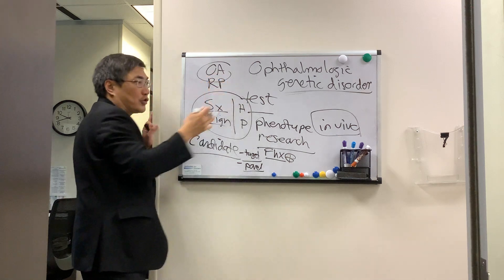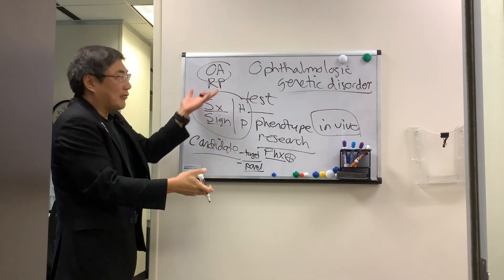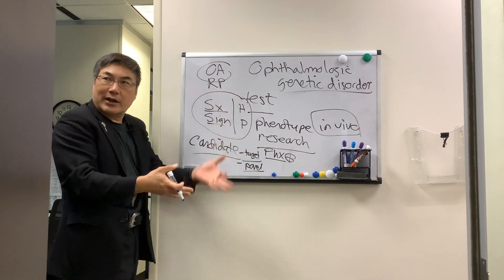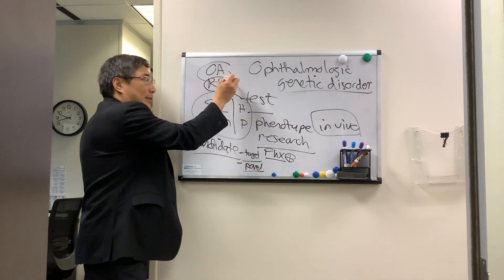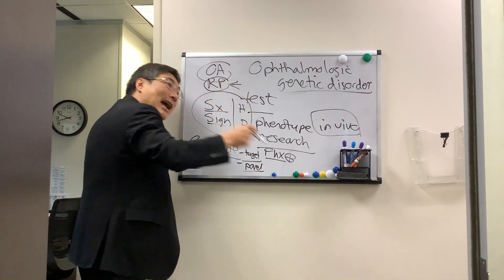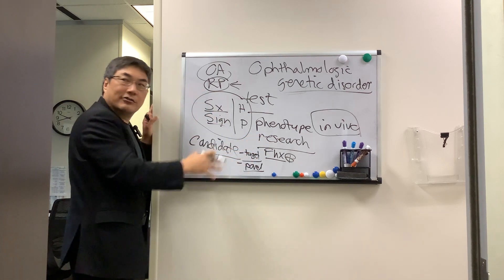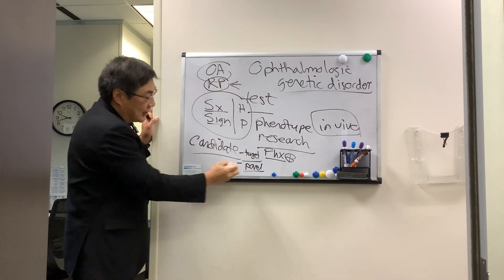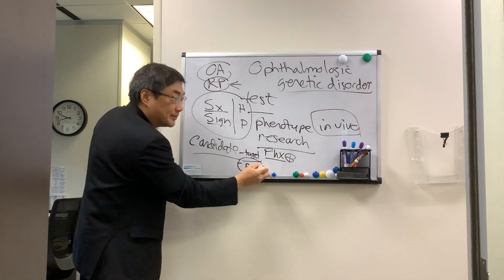Similarly, disorders where there's a final common pathway — like retinal degeneration with bone spicules in retinitis pigmentosa — you cannot look at someone's RP and say, that's that gene, because there are literally hundreds of genes that look exactly like that. That's where the panel comes in.